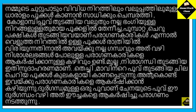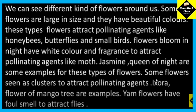We can see different kinds of flowers around us. Some flowers are large in size and have beautiful colors — these attract pollinating agents like honeybees, butterflies, and small birds. Flowers that bloom at night have white color and fragrance to attract moths. Jasmine and queen of night are examples. Some flowers seen as clusters attract pollinating agents — ixora and mango tree flowers are examples. Yam flowers have a foul smell to attract flies.